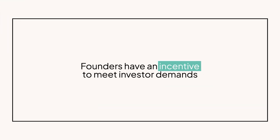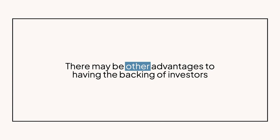Why would a founder ever agree to terms like that? There are a couple reasons. One, founders have an incentive to meet investor demands because they may view investor financing as preferable to other sources of funding, like taking on debt. Debt has to be paid back whether the company succeeds or has to wind down, and investor financing generally doesn't. Two, there may be other advantages to having the backing of investors — especially notable venture capital firms that can give advice, help with networking, or put the word out to other investors. For those reasons, founders are generally willing to accept these fairly standard terms when it comes to preferred shares.